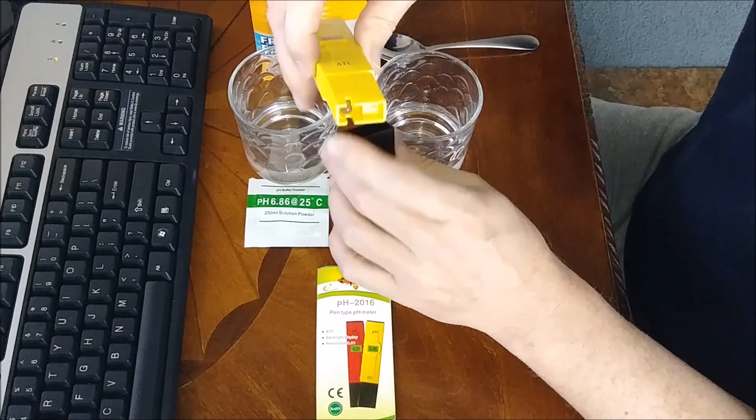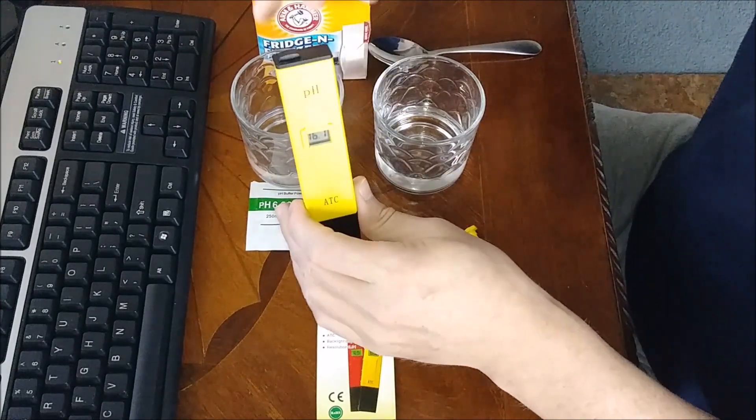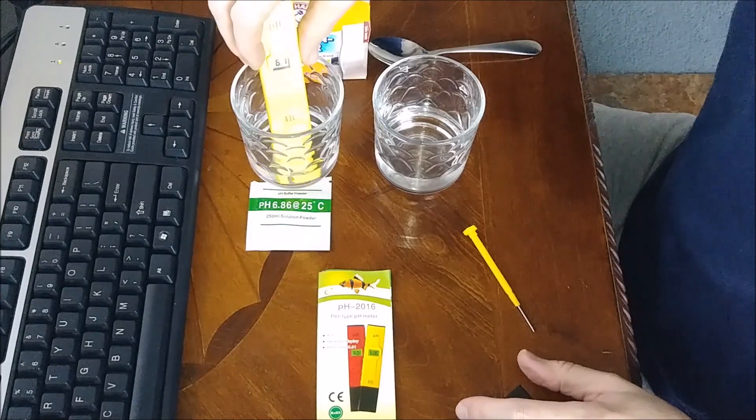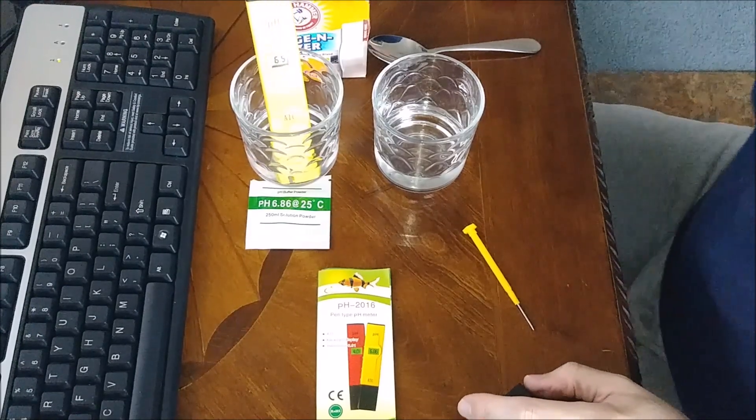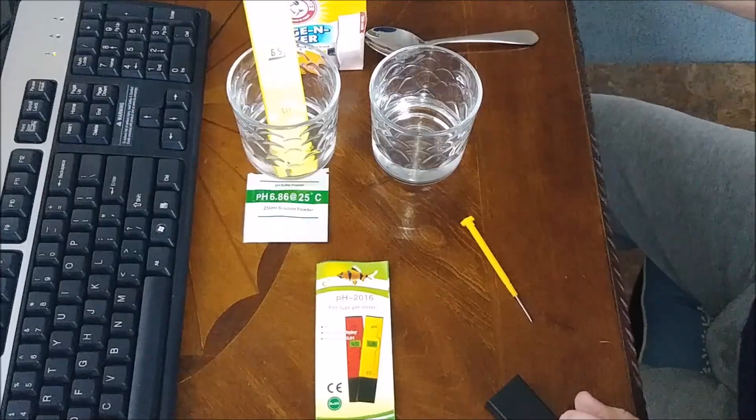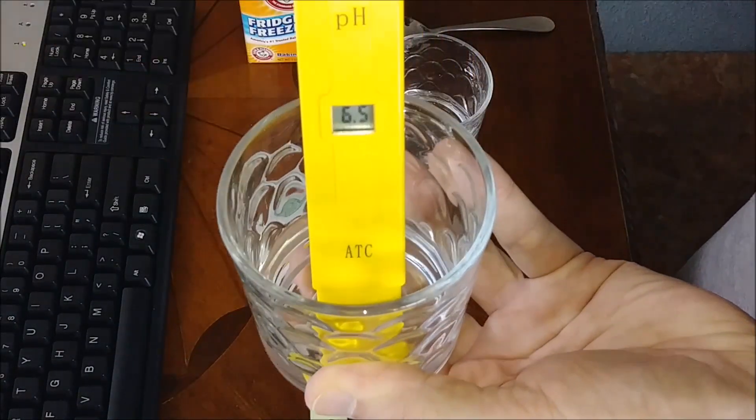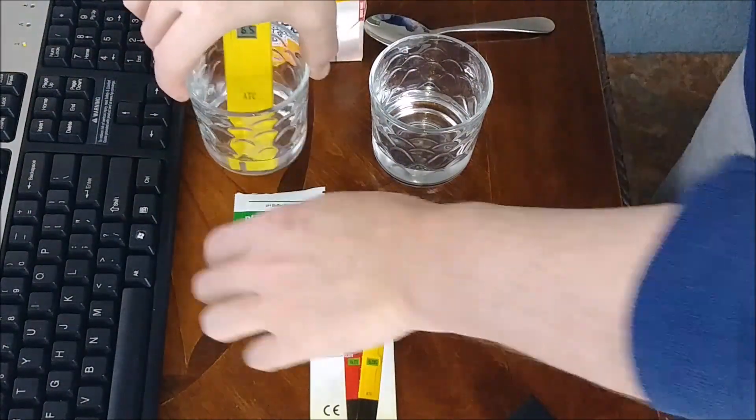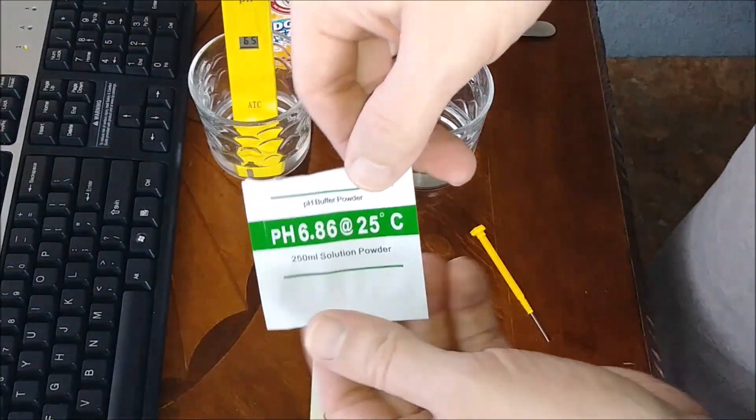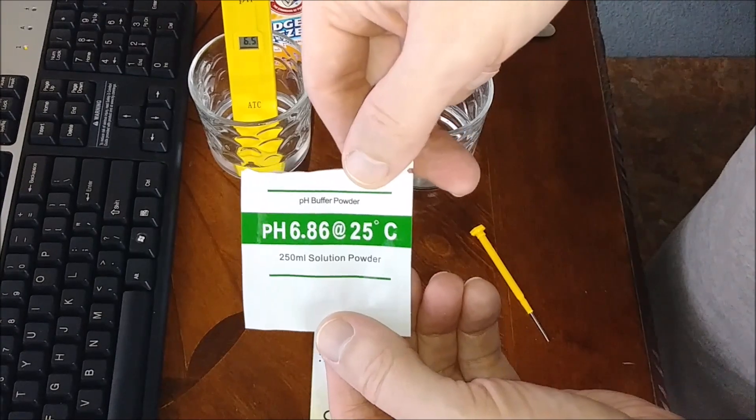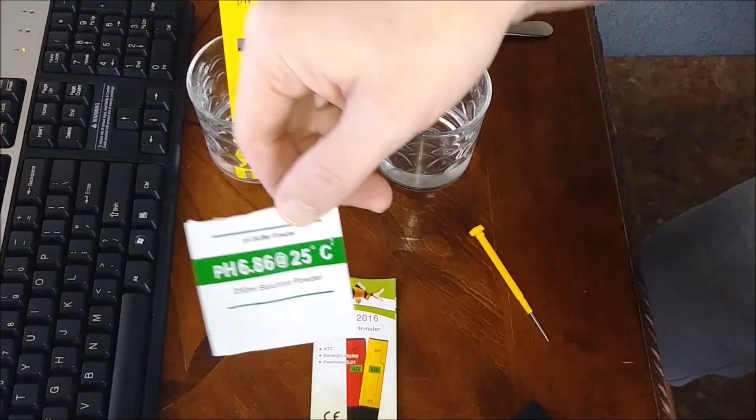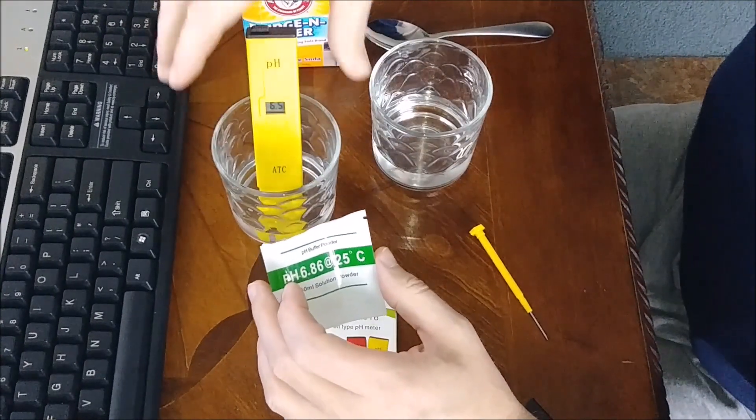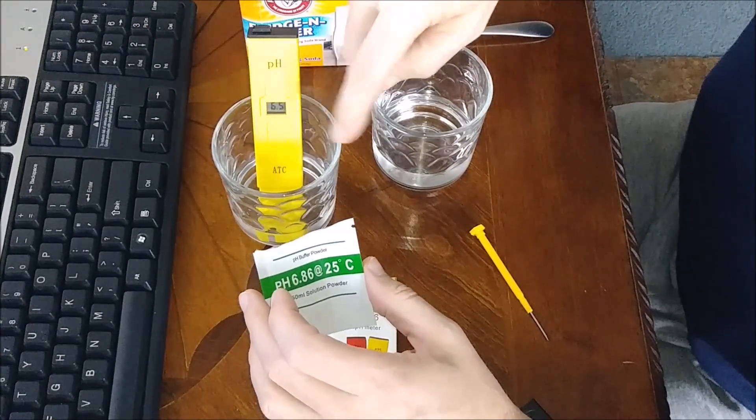I'm going to do this two ways. Now we'll go ahead and put this in the solution, and right now it just came up to 6.5. According to this little package here, it's pH'd at 6.86. You're going to want your ambient temperature around at least 70 to 75 degrees when you do your water; you don't want it too cold.